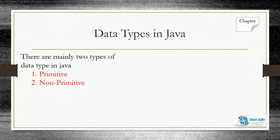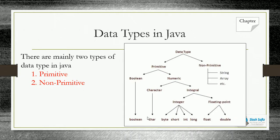In Java, we have only two types of data: primitive data type and non-primitive. Primitive includes boolean, character, byte, short, int, long, float, and double. Non-primitive includes strings, arrays, objects, structures, etc. Floating point types are float and double.